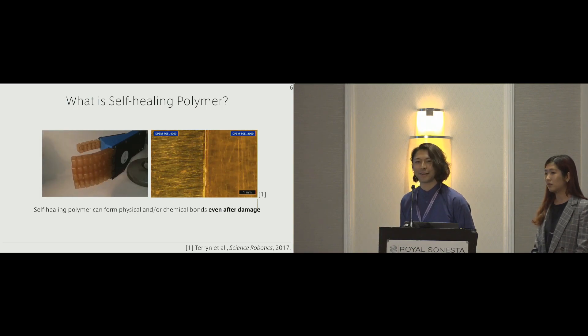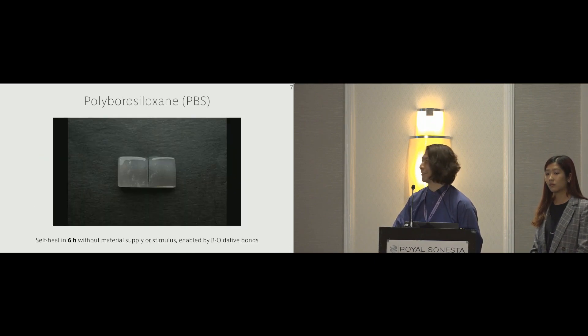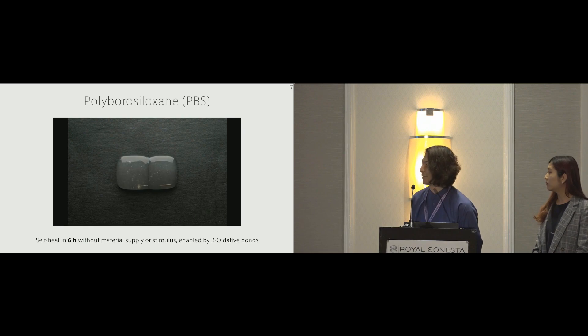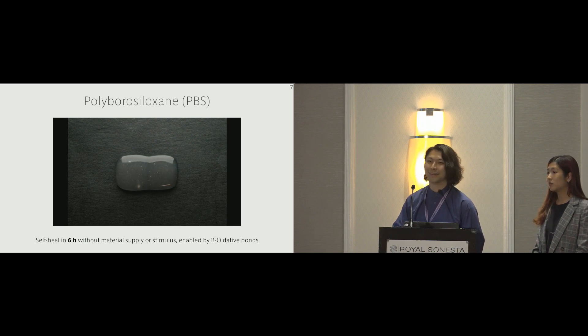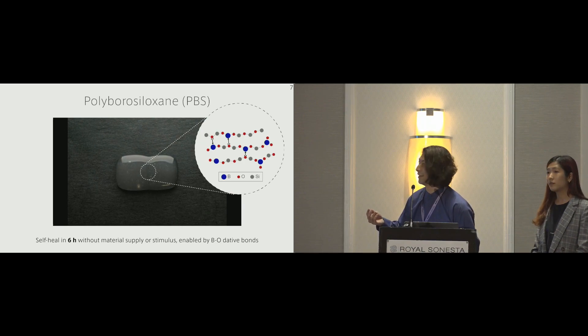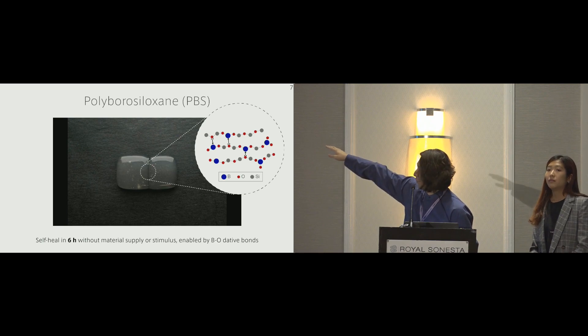Although there are enormous numbers of reports in the material sciences community, the material we use is called polyborosiloxane PBS, a derivative material of PDMS. What is interesting about this material is PBS can self-heal in six hours without any material supply or external stimulus, such as heat, to trigger a self-healing process. This amazing phenomena is enabled by the special cross-linking called diol bond between boron and oxygen, which makes it possible to repeatedly break and connect the polymer chains.